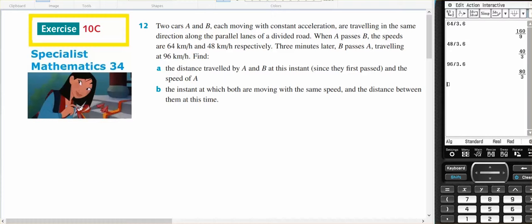This is for Year 12 Specialist. It comes out of Tennessee Question Number 12. Two cars, Car A and Car B, are moving with constant acceleration. But it may not be the same acceleration, but each of them are moving with constant acceleration. They're traveling in the same direction along the same parallel lanes of a divided road.